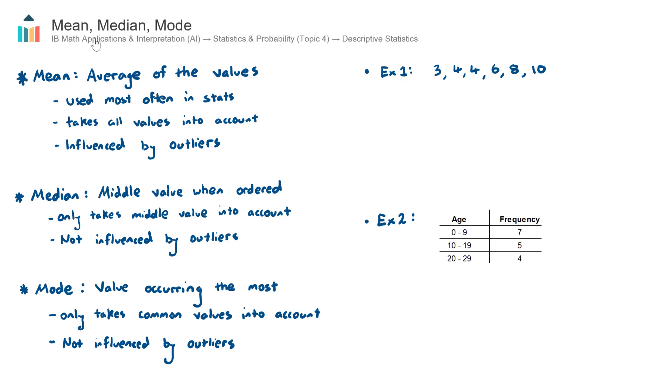This video is a quick overview of the three measures of center of a data set: the mean, the median, and the mode. This falls under topic four, stats and probability, in the AI course under the subtopic of descriptive statistics.